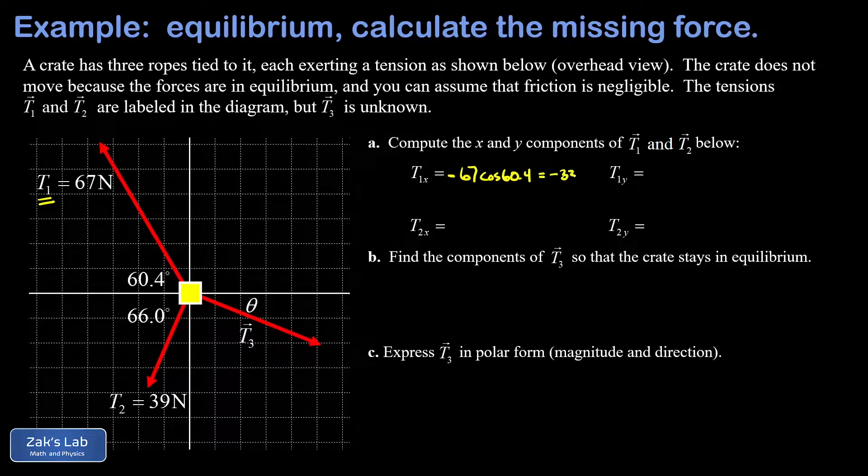Now the y component of that 67 newton vector is given by 67 sine of 60.4, and this takes a positive sign because it's pointing upward, which is our conventional positive direction for the y coordinate. When I run the numbers on this I get 58.3 newtons.